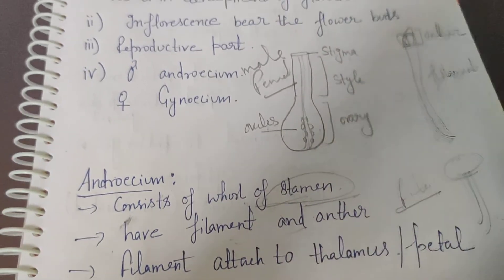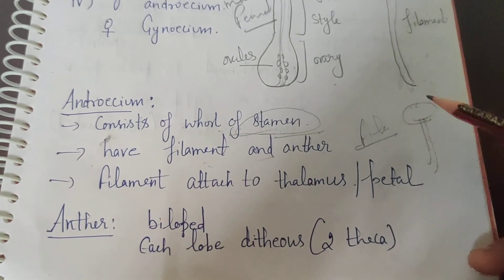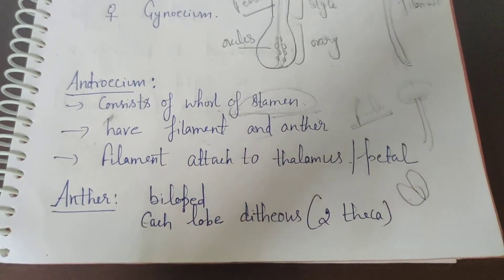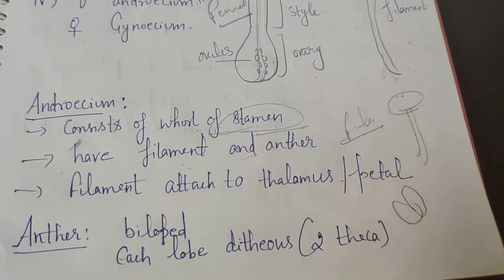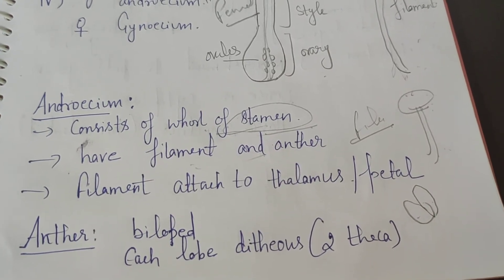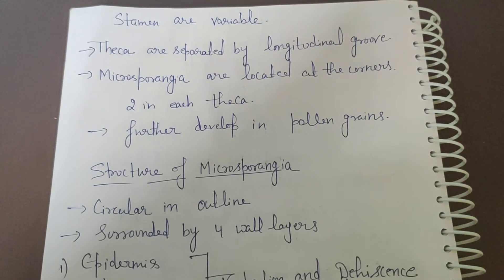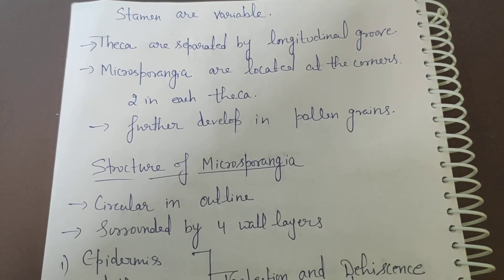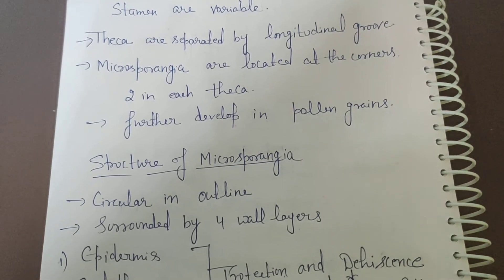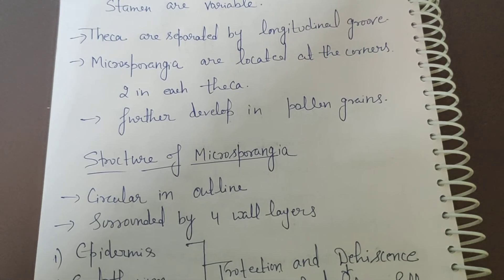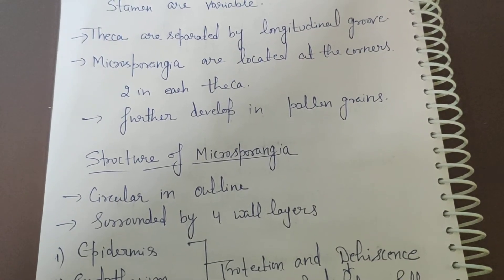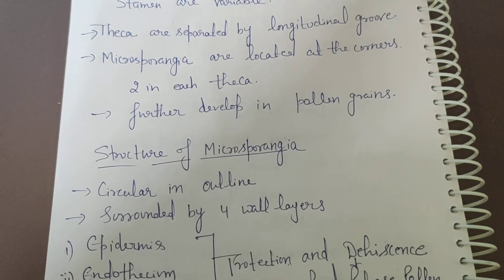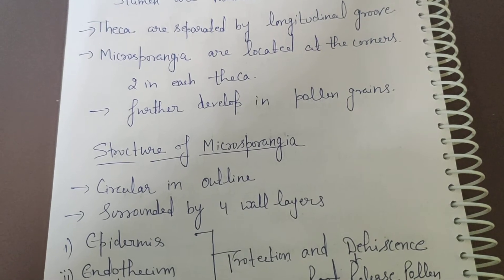If we talk about the anther, the anther is a bilobed structure, meaning there are two lobes present. Each lobe is dithecous, meaning there are two thecae present in each lobe. The stamen structure can be variable — if you collect seven to eight flowers and compare the stamen structures, you will find variability. The thecae are separated by a longitudinal groove. The stamen has microsporangia present in the corners, and in each microsporangia there are two thecae, which will be converted to pollen grains.